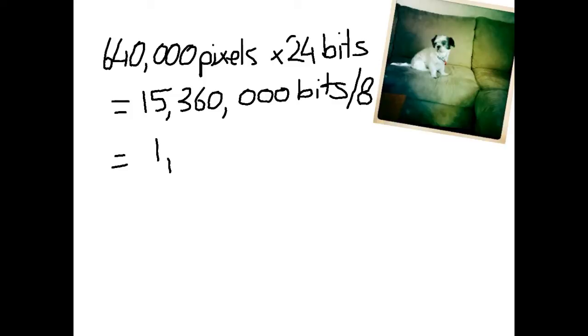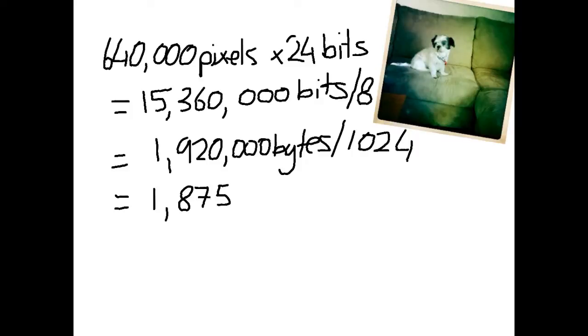That gives us 1,920,000 bytes. But again that's a very big number. So we might go down another step and divide by 1,024, and that will give us 1,875 kilobytes. And let's go one more. We'll put it into megabytes and we'll divide by 1,024 again and we get 1.83 megabytes.